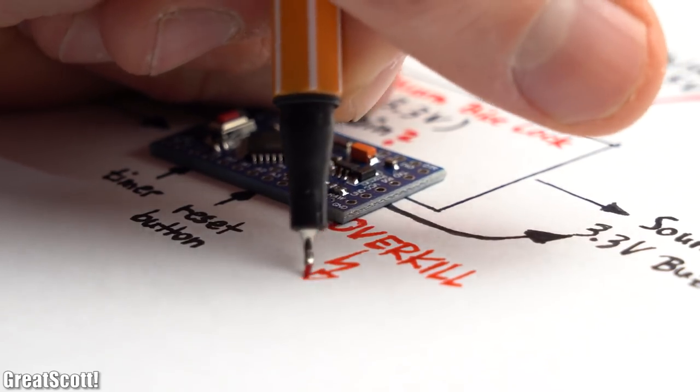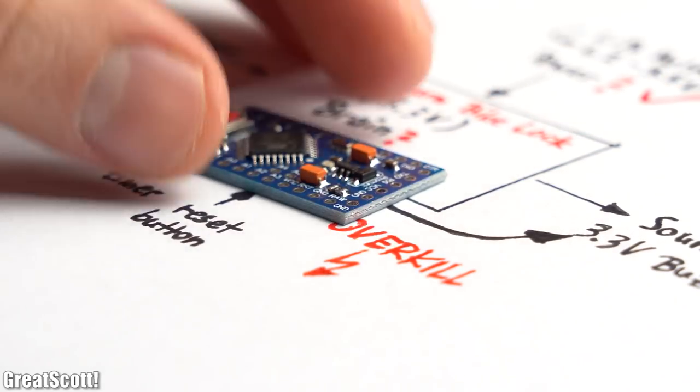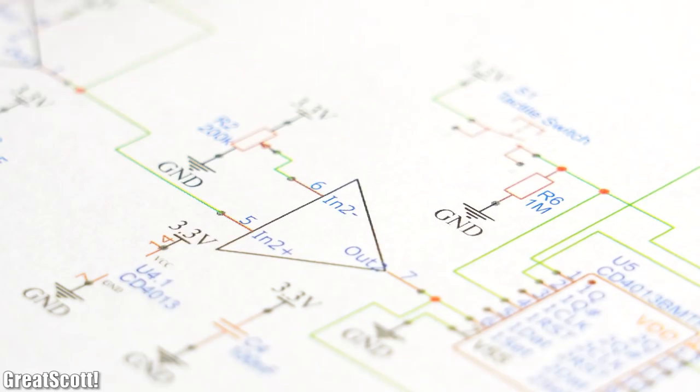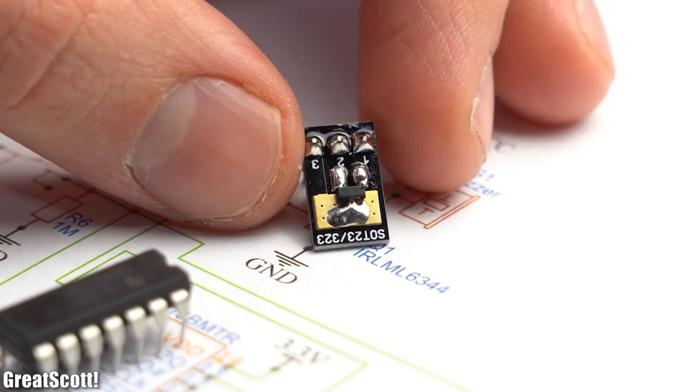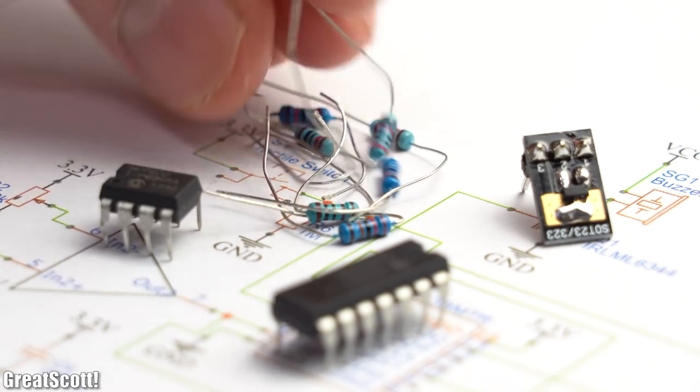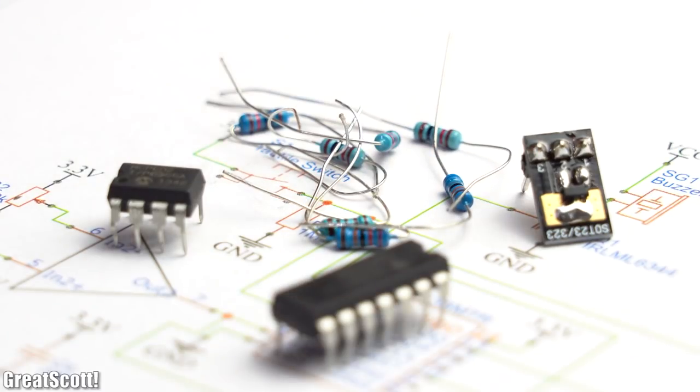But since using a microcontroller for such a task would be a bit of an overkill, I instead used an op-amp as a comparator, a D-type flip-flop, a logic level MOSFET, and a couple of extra passive components in order to create this schematic.